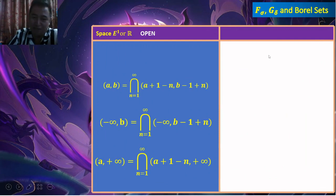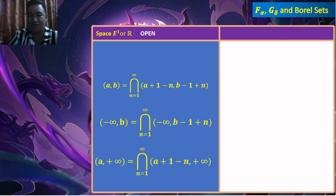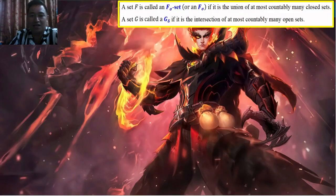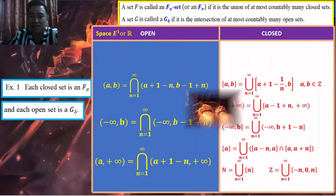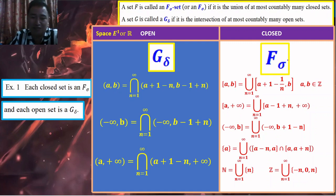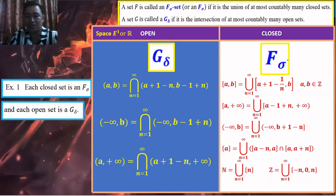To show this, the open set (A,B) is equal to the intersection of (A + 1/N, B - 1/N) for N from 1 to infinity. The interval (A,B) as an open interval is the result of that intersection. Similarly, the interval from negative infinity to B is equal to the intersection of (negative infinity, B - 1/N + N) as N goes from 1 to infinity.